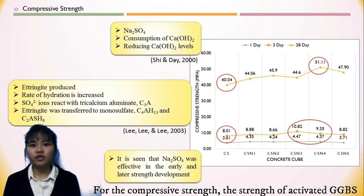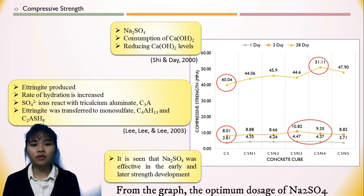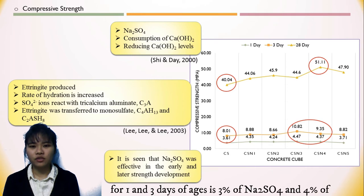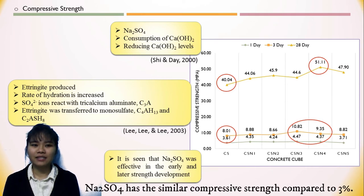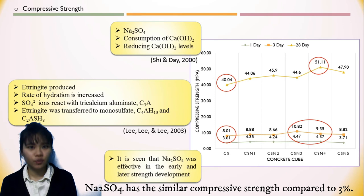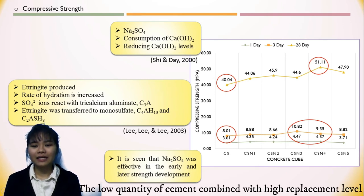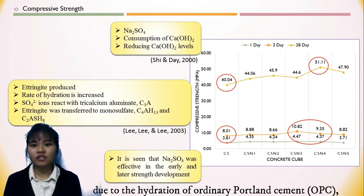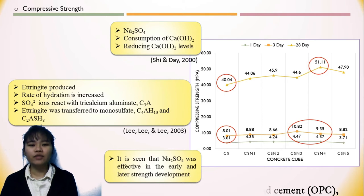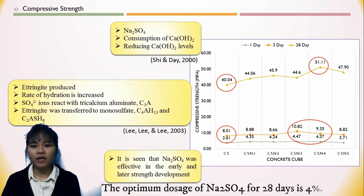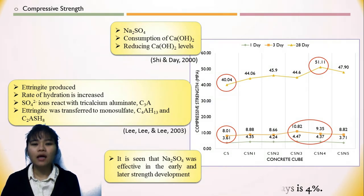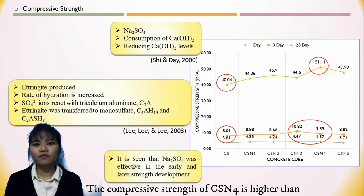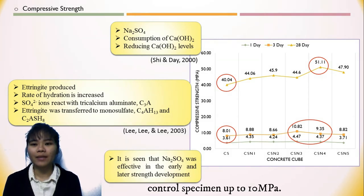For the compressive strength, the sulfate-activated GGBS concrete is higher than the control specimen. From the graph, the optimal dose of sodium sulfate for 1 and 3 days is 3%, and 4% has a similar compressive strength compared to the 3%. The low quantity of cement combined with the high replacement level of GGBS reduced the formation of CSH gel due to hydration of OPC, resulting in lower compressive strength. The optimal dose of sodium sulfate for the 28-day strength is 4%, where the compressive strength of the CSN4 mix is higher than the control specimen by up to 10 MPa.